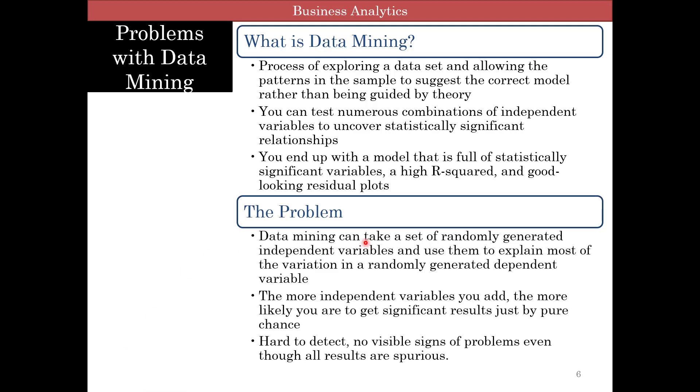Because data mining can take a set of randomly generated independent variables, that is completely random, no connection to the dependent variable, and find patterns there. And so you can use them to explain variations just by chance. The more number of variables you have, the more likely you're going to get significant results just by pure random chance. This problem is hard to detect. There are no visible signs. Even though all the results are spurious, everything looks fine. So unless somebody knows what you did, which is go and explore the data set, they think this is great, and you're going to cause a whole bunch of problems.